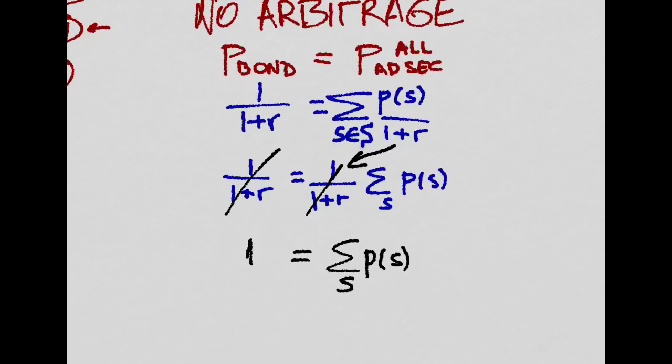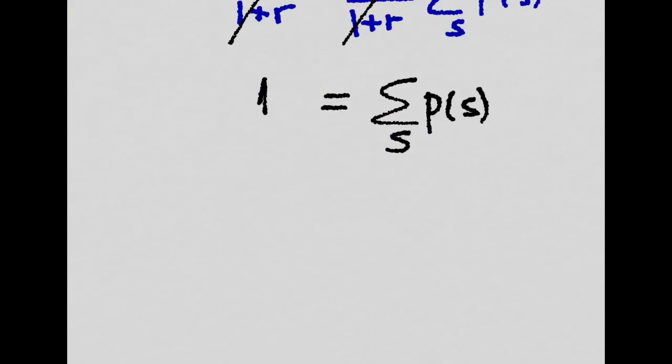This basically means that if you buy an Arrow-Debreu security for each possible state of the world, at least one of those states will be realized and you will receive one unit of output at T plus 1.